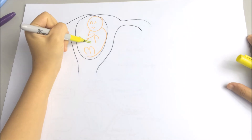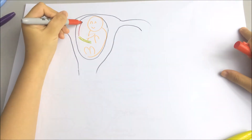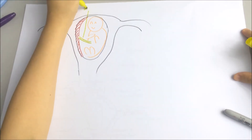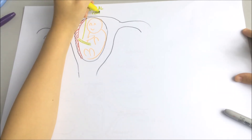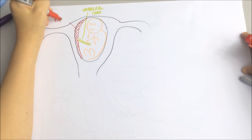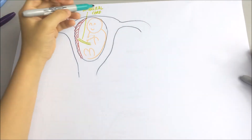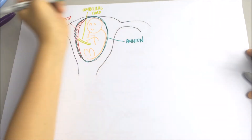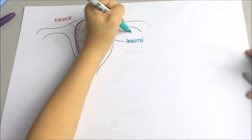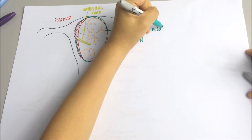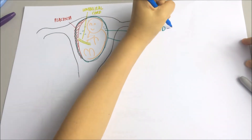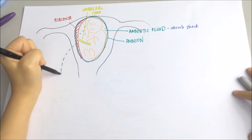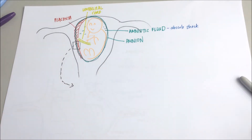The site where the fetal blood and the maternal blood come into contact is known as the placenta. There is a cord that connects the fetus to the placenta, known as the umbilical cord. The fetus is also enclosed in a membrane known as the amnion, and the amniotic fluid within it functions to protect the fetus by absorbing shocks and cushioning it from physical damage.